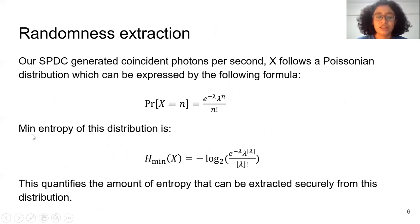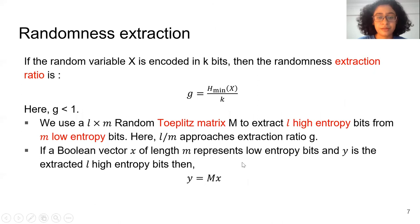Randomness extraction. If x is a random variable that denotes the coincident event, we can write the probability of x equals n with this Poissonian distribution, where lambda is the coincident rate average. We are taking a mean entropy of this distribution. The coincident events recorded in our counting circuit are encoded in a k-bit register. For us, k is 16 bits, and we compute the h mean of this distribution. From this ratio, we can get the extraction ratio which we denote by g. Usually g is less than 1.